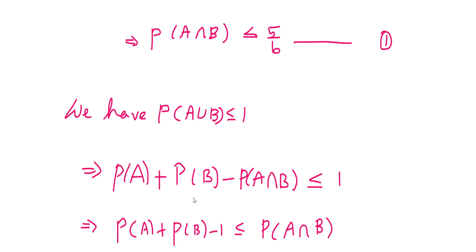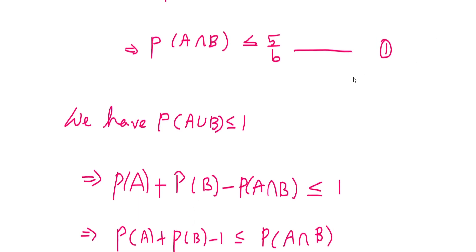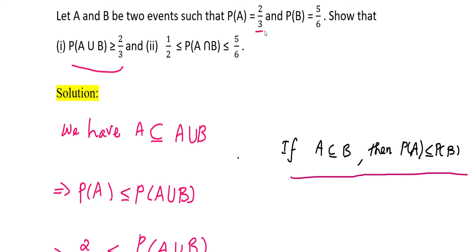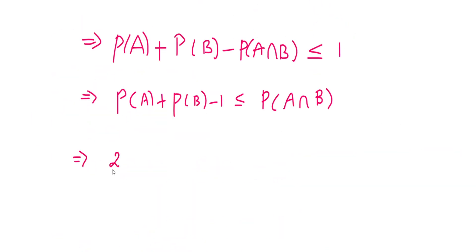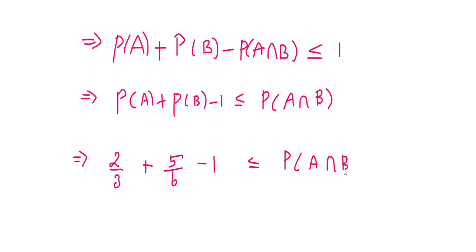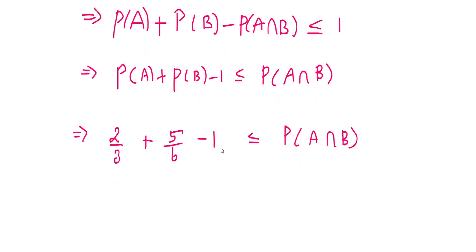Now substituting P(A) = 2/3 and P(B) = 5/6: 2/3 + 5/6 − 1 ≤ P(A∩B). The highest denominator is 6, so converting: 4/6 + 5/6 − 6/6 ≤ P(A∩B). Adding the numerators gives 1/2 ≤ P(A∩B).